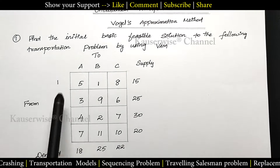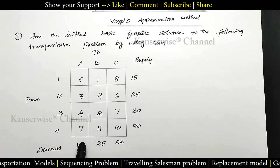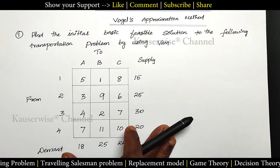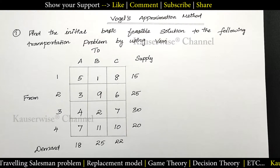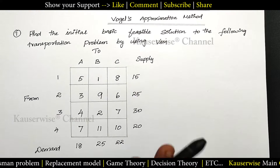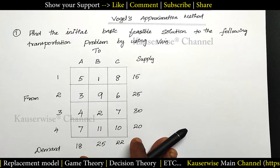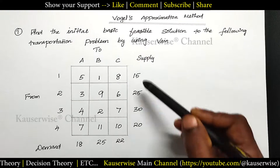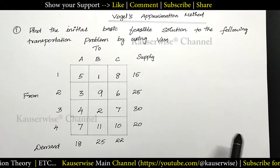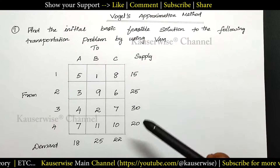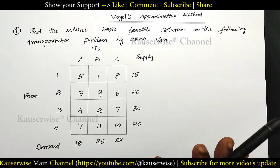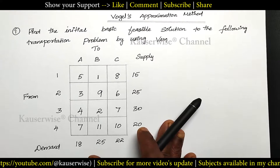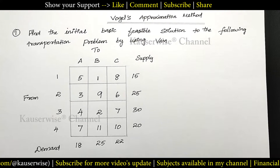Here they have given one cost matrix along with demand and supply. Before you solve the problem by using any method, the first step is we need to check whether the problem is balanced or unbalanced. Balanced means the demand and supply will be equal. If demand and supply are not equal, then it is called an unbalanced transportation problem. So this problem is an unbalanced transportation problem.